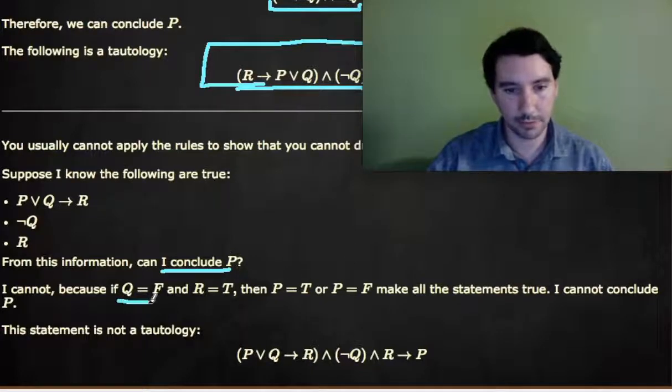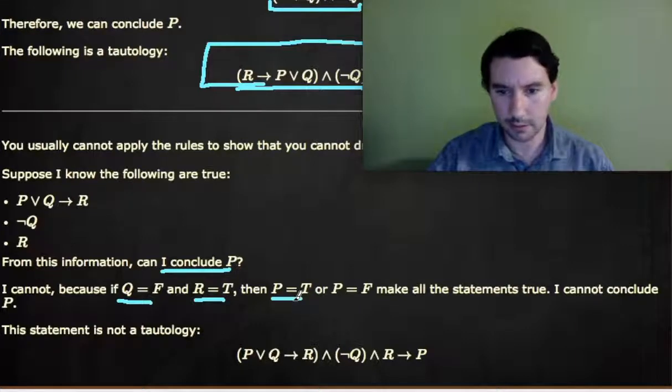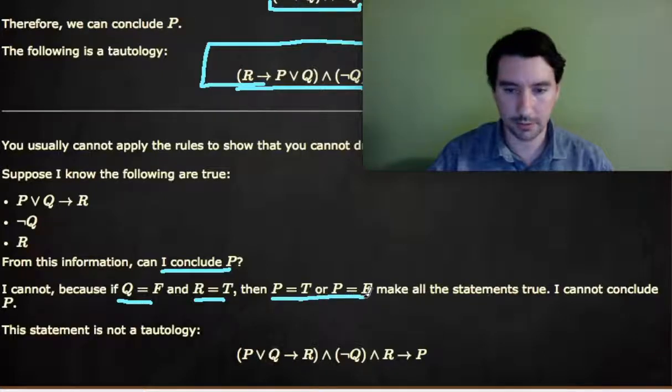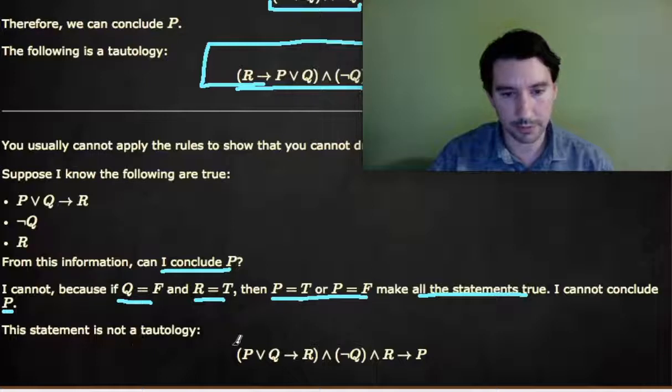However, if I let Q be false, R be true, and P be false, all the statements will be true. But I cannot conclude P. So therefore, this statement is not a tautology.